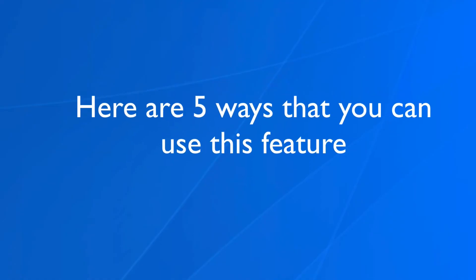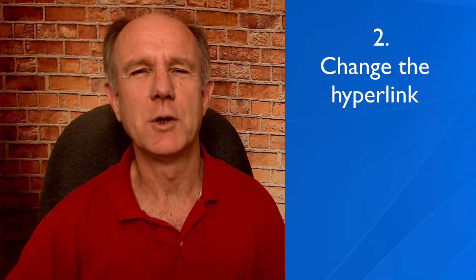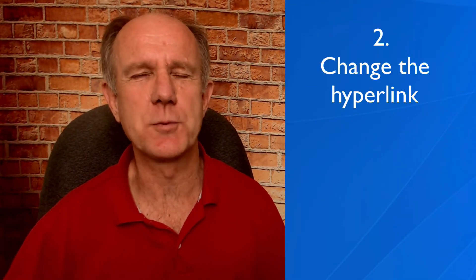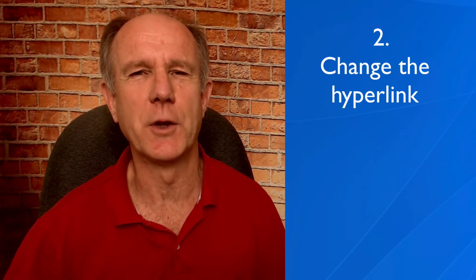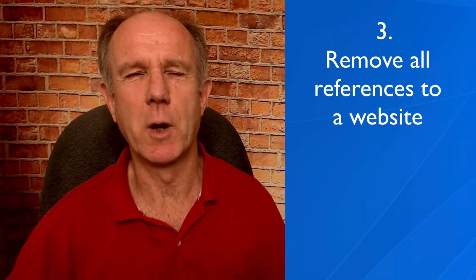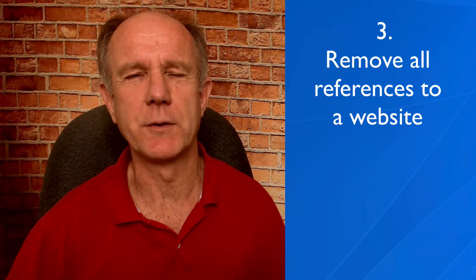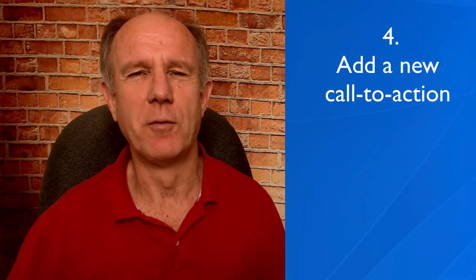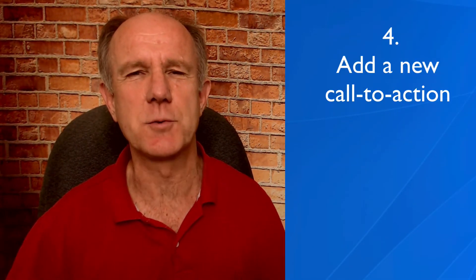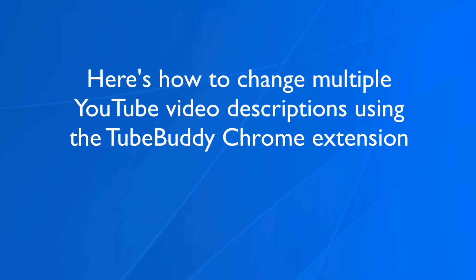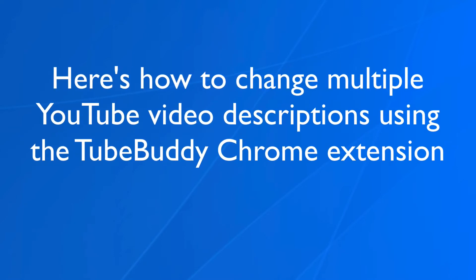Here are five ways that you can use this feature. Number one, you can change the social profile in the middle of all the existing video descriptions. Number two, you want to change the hyperlink in the descriptions of all videos on your channel with a new link. Number three, you want to remove all references to a website you've been promoting in your descriptions. Number four, you want to add a new call to action in the descriptions of all videos on your channel.